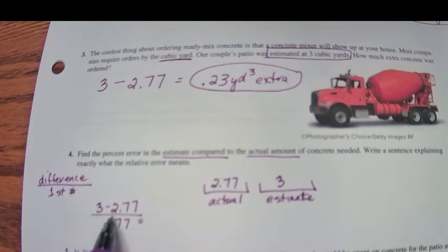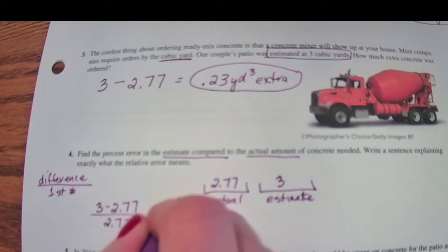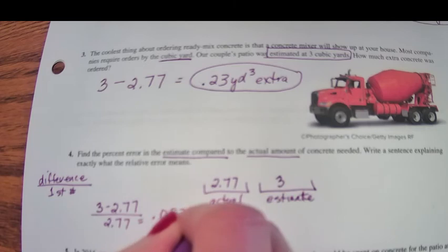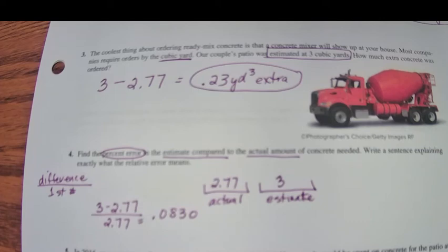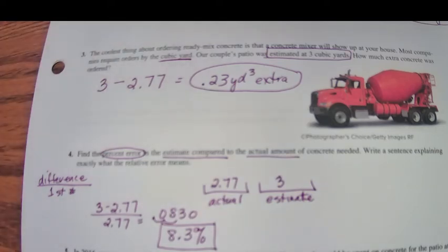What's the difference? 3 minus 2.77 over 2.77. That's actually what we need. So 3 minus 2.77 divided by 2.77 is 0.0830. But they didn't ask for the error. They asked for percent error. So remember what we do to change to percent? We move the decimal over 2 and add the percent sign. So the relative difference, or the error, basically 8.3 percent more concrete was ordered than was needed.